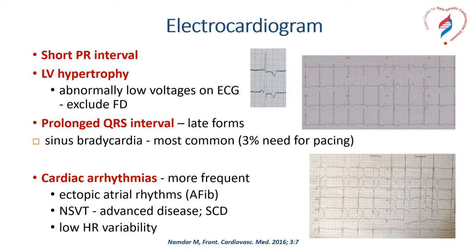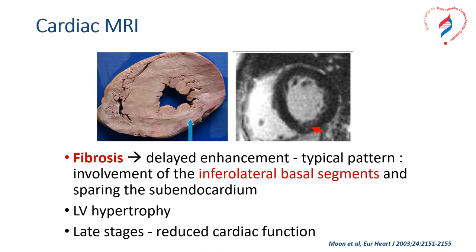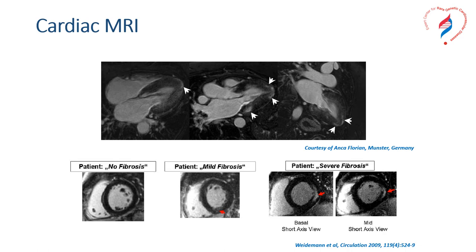Cardiac MRI is one of the imaging modalities of choice in Fabry cardiomyopathy. Besides showing the expected left ventricular hypertrophy, it brings important structural information. Localized fibrosis, as seen in anatomopathological specimens, can be seen as delayed enhancement with a typical pattern involving the infralateral basal segments and sparing the subendocardium. Fibrosis can range from absent in some patients to mild and severe, and can also involve other segments, such as when basal infralateral wall fibrosis is associated with apical fibrosis.